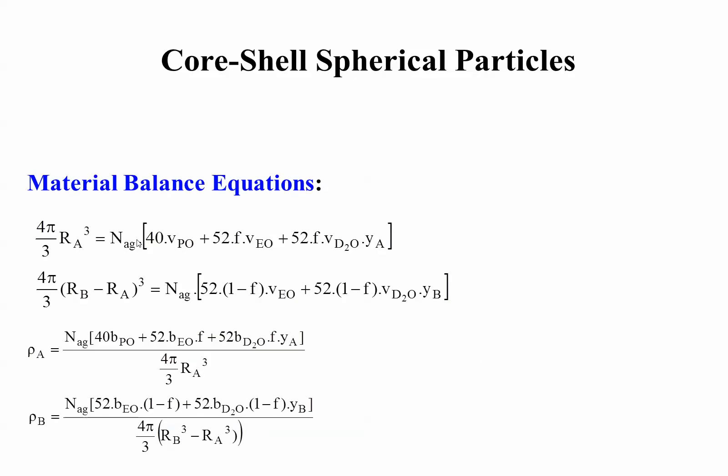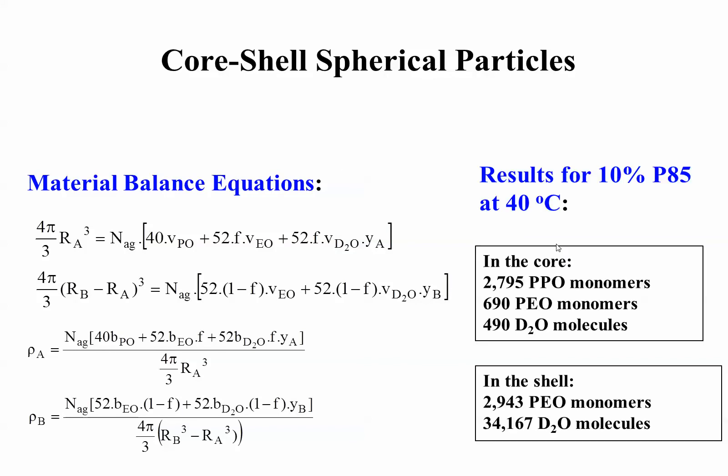Core shell spherical particles, one can also go one step further and work out the material balance. All I want to say is you can get more from fit results, more than the size of the scattering density. If you do a material balance equation, what you can get is how many particles are in the core, like there are 3,000 PEO monomers, about 700 PPO monomers. Not many PPO monomers inside the core, but it was a surprise to us there are any. PEO is hydrophilic, but a few of them end up being in the core as well. Then, each time you have PEO, you need to hydrate them a little bit. There are a few water molecules inside the core as well. In the shell, there are about 3,000 PEO monomers, and each one is hydrating factor of 10 water molecules per EO monomers.